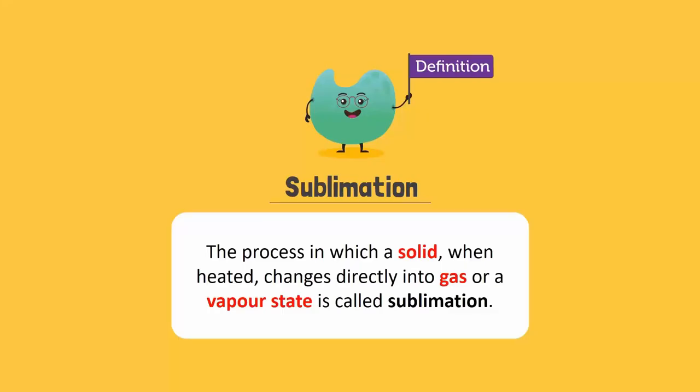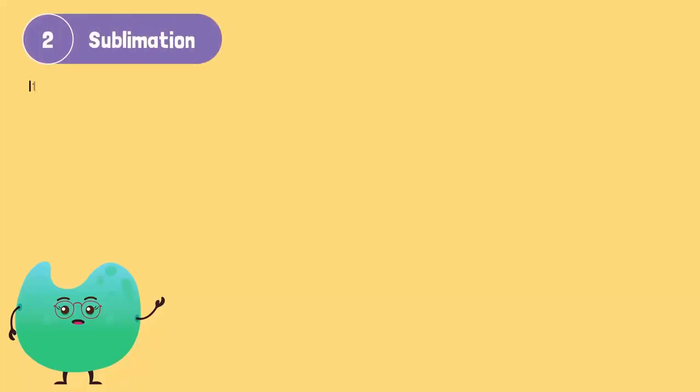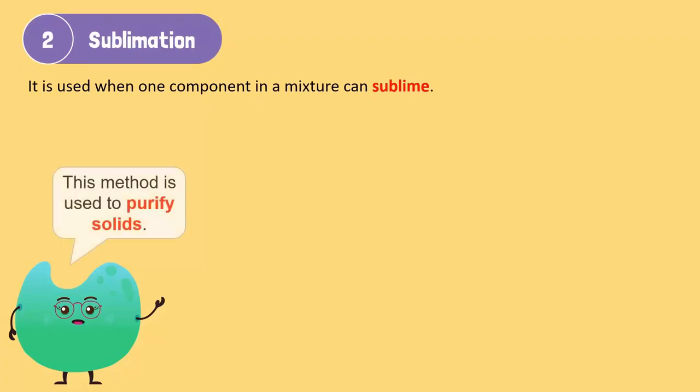The process in which a solid, when heated, changes directly into gas or a vapor state is called sublimation. We use this process to separate two components of a mixture in which one component has the ability to sublime. It is used to purify compounds.